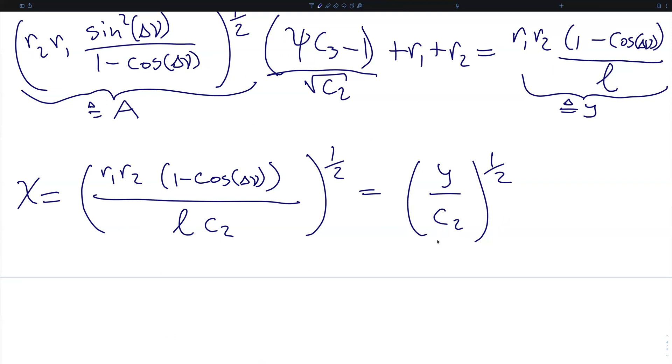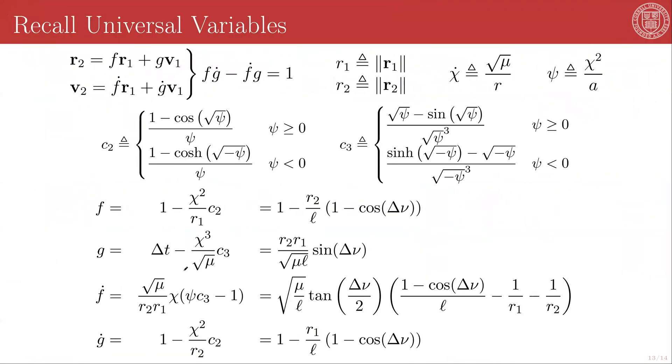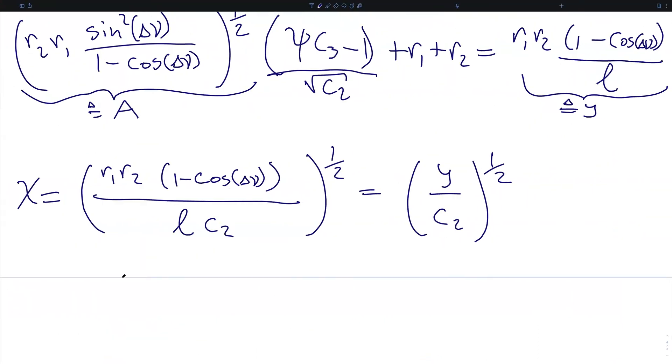We now return to our expressions for the g function, as given here. Delta t minus chi cubed over root mu c3 is equivalent to r2 r1 over root mu l sine delta nu. And we're going to rewrite this in terms of our newly defined A and y functions, and that will give us the expression delta t minus chi cubed c3 over the square root of mu is equal to A square root of mu.